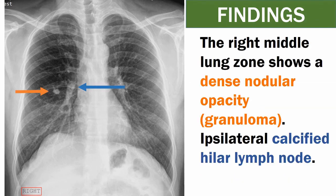Let's see the chest x-ray findings. The right middle lung zone shows a dense nodular opacity, which is a granuloma, and there is also ipsilateral calcified hyaline lymph node.